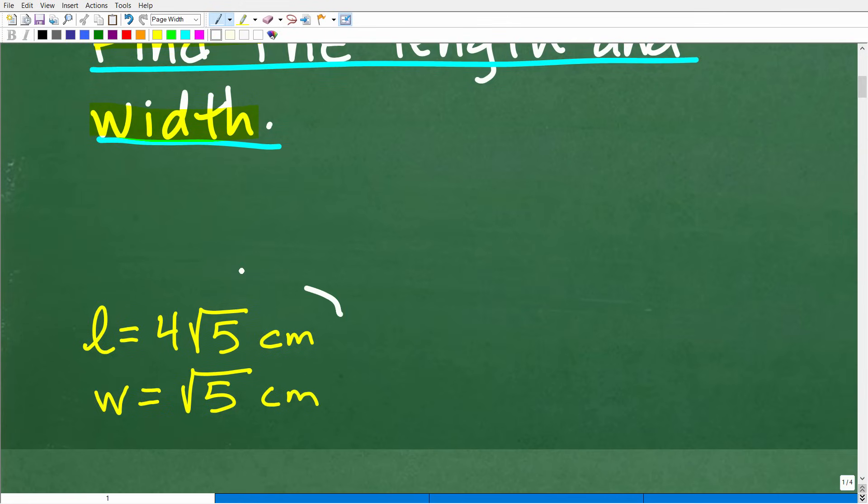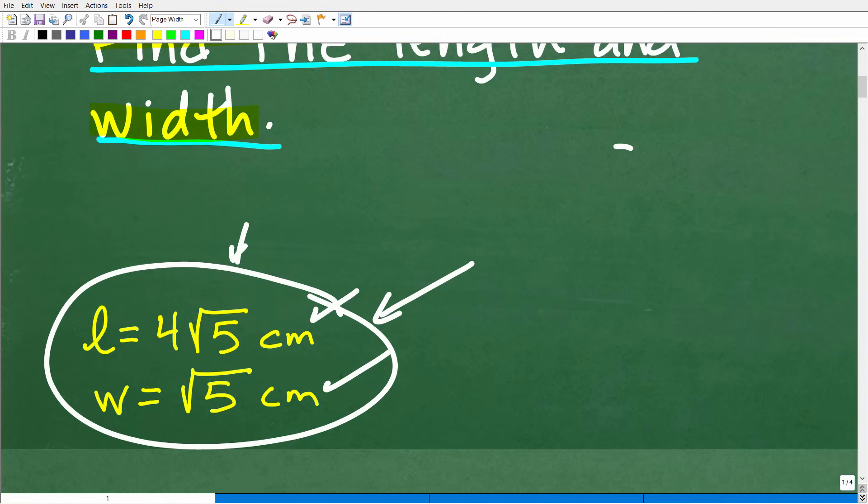The correct answer is the following. So the length is four times the square root of five centimeters, and the width is the square root of five centimeters. Now, you'll have to judge for yourself if you actually took the square root of five, and you have a decimal value. But this is the right answer.